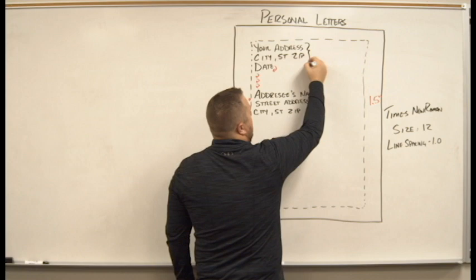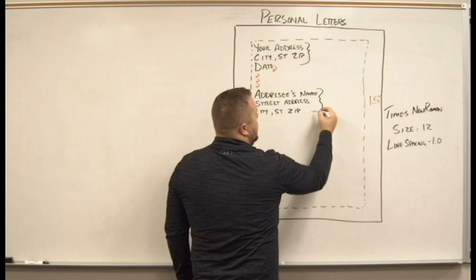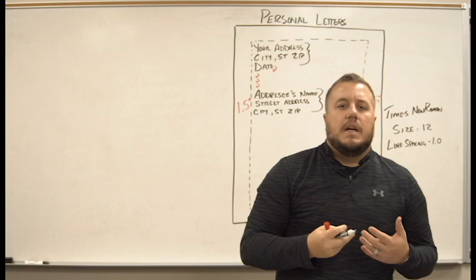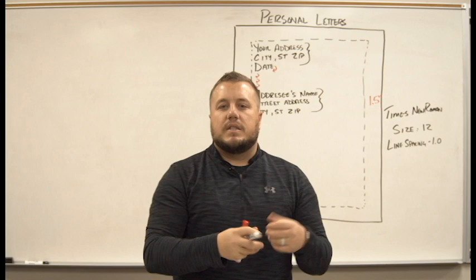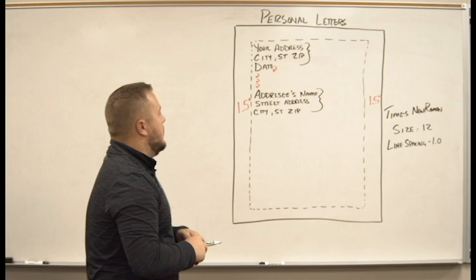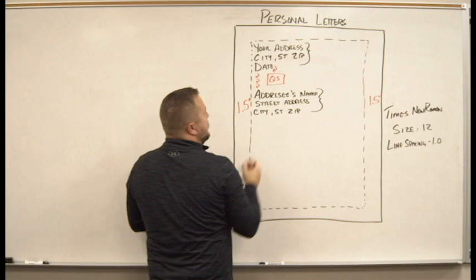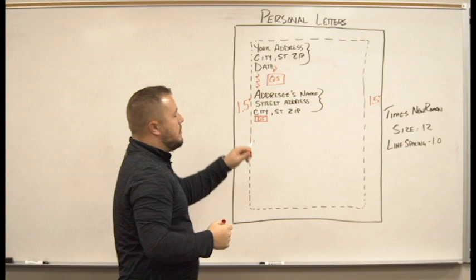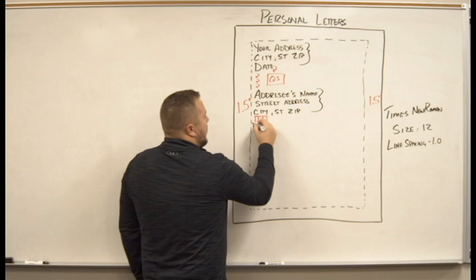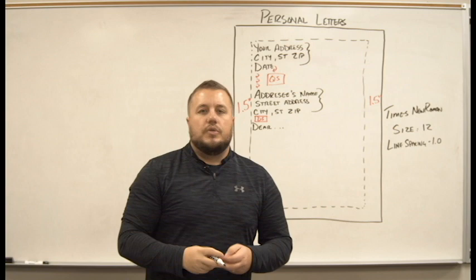So we have our address at the top, and then whoever we're writing it to, their address below. The reason we have our address in there — it's called the inside address — is so that in case the envelope gets lost, they still have our return address in case they need to send something back to us. Next, we're going to go double space — hit Enter twice — and at this point we're going to put 'Dear...' followed by the addressee.